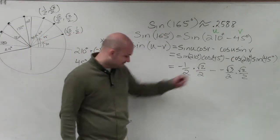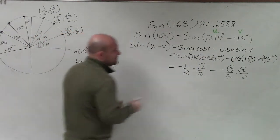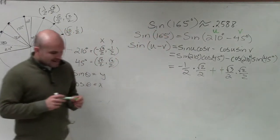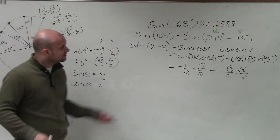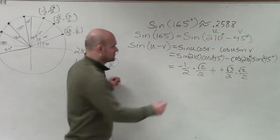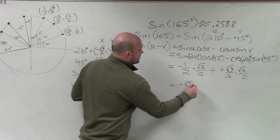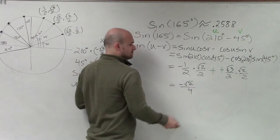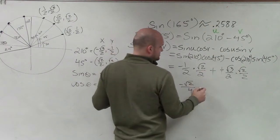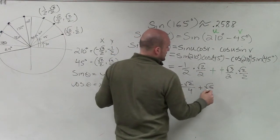We see here we have a double negative, which we now know is going to multiply to a positive. Now we need to multiply across. Negative 1 times square root of 2 is negative square root of 2 over 4. This is plus. That becomes square root of 6 over 4.